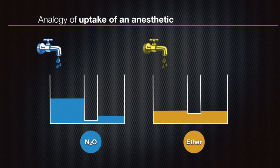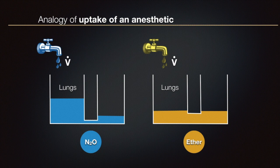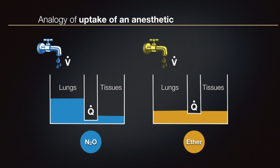The tap represents the ventilation of the anesthetic into the lungs, as represented by the left-hand chamber in each set. The level of agent in the left-sided chamber represents the concentration of the anesthetic in the alveoli. The removal of anesthetic by pulmonary blood flow from the reservoir is denoted by the connecting pipe, and the rate of transport by cardiac output is shown as Q. The right-sided reservoir represents the tissues. The diameter of the connecting pipe is wider in the second set for ether, as an analogy for higher solubility coefficient.